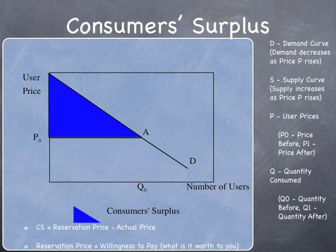If you've had a micro course, you probably saw a curve that looked like this. The idea of consumer surplus actually comes from civil engineering. Jules Dupuis, a French civil engineer from the mid-19th century, developed this idea to analyze transportation projects. But now it's mainstream economics. The idea is that there is a demand curve which represents your willingness to pay — how much money you would pay in order to get the benefits of that project.